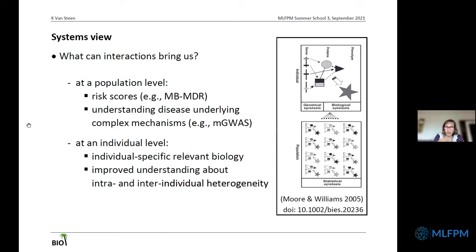At the population level, I will dwell a little bit further on the role of interactions in polygenic risk scores — which you already saw during one of the previous summer schools in this network — and what is the role of the environment.